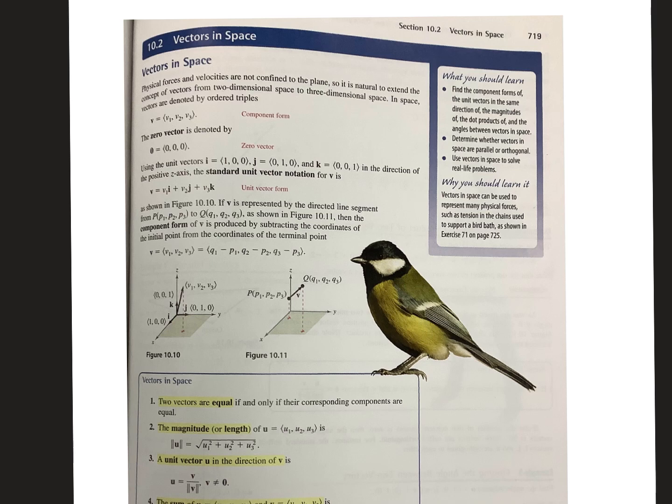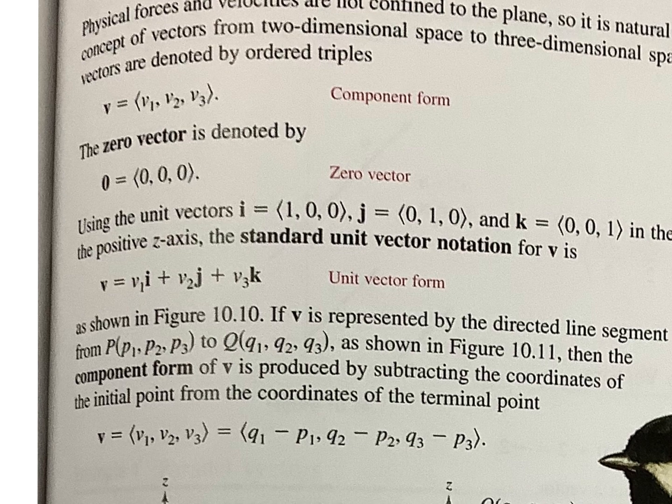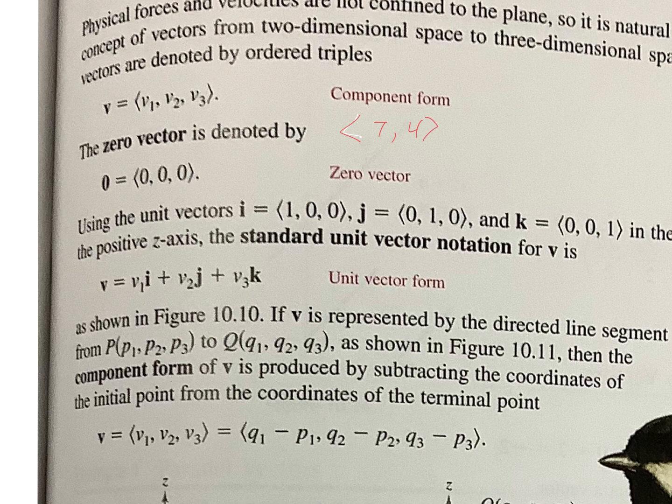10.2 is talking about vectors in space. We've already done all of this stuff with vectors in a two-dimensional arena. Now we're going to do it in a three-dimensional. So here is our vector. Remember when we had two pieces of our vector? We had our component form. It was like 7, 4, right? Well, now we have three pieces in our vector.